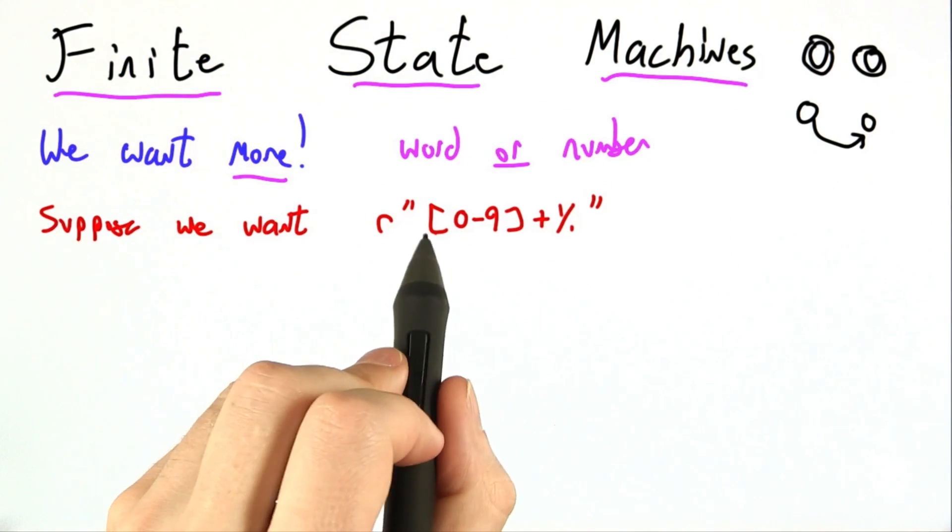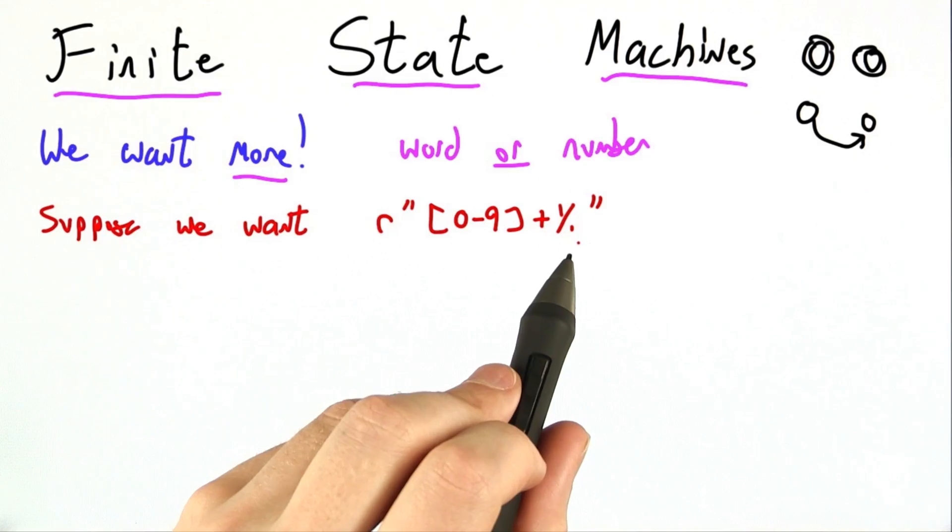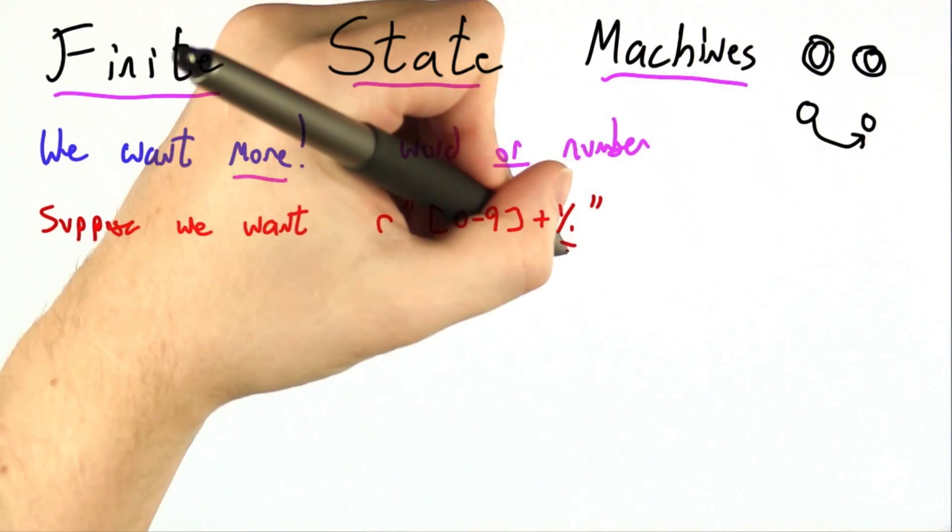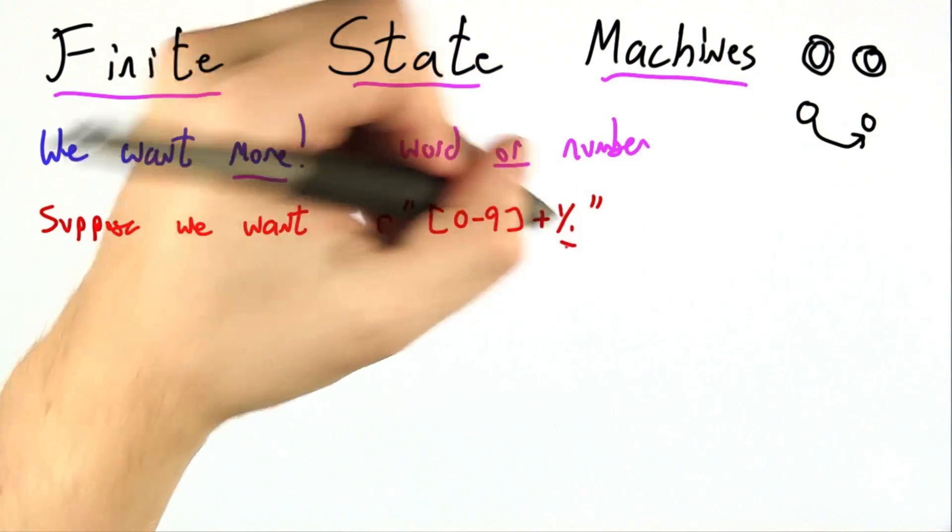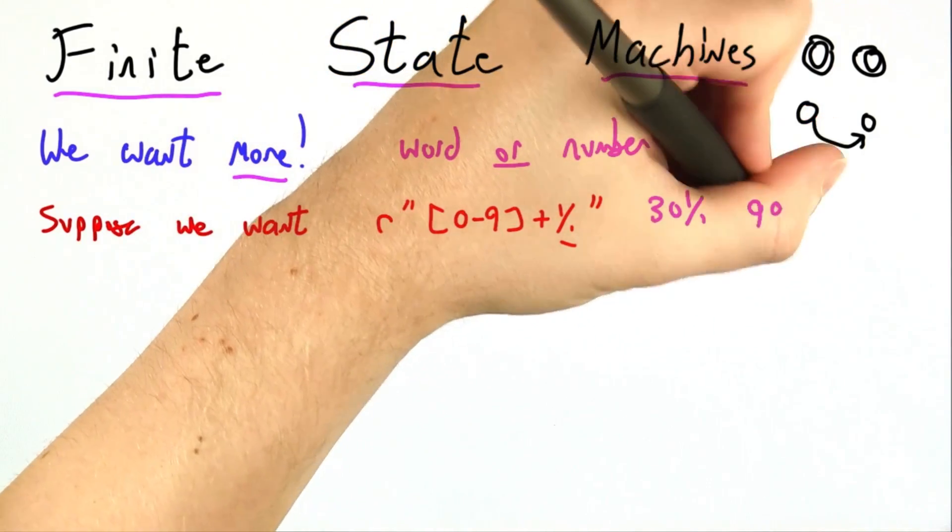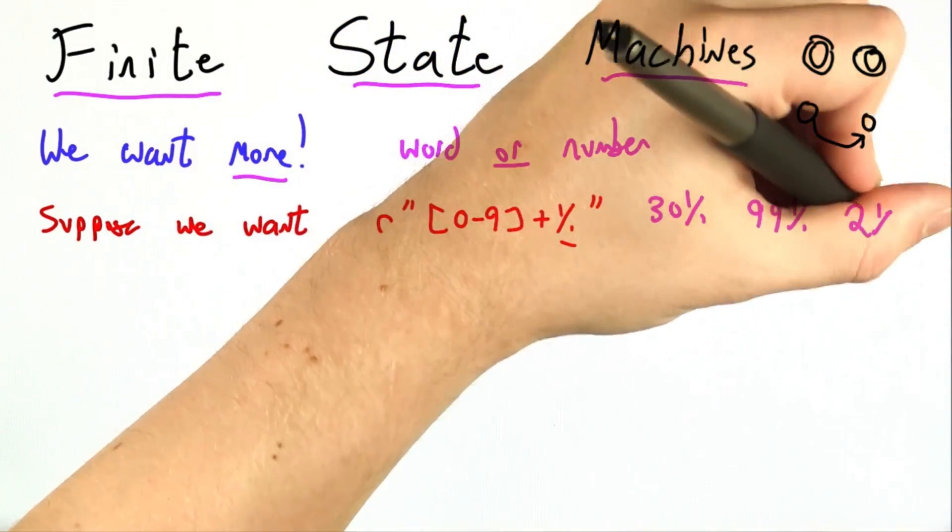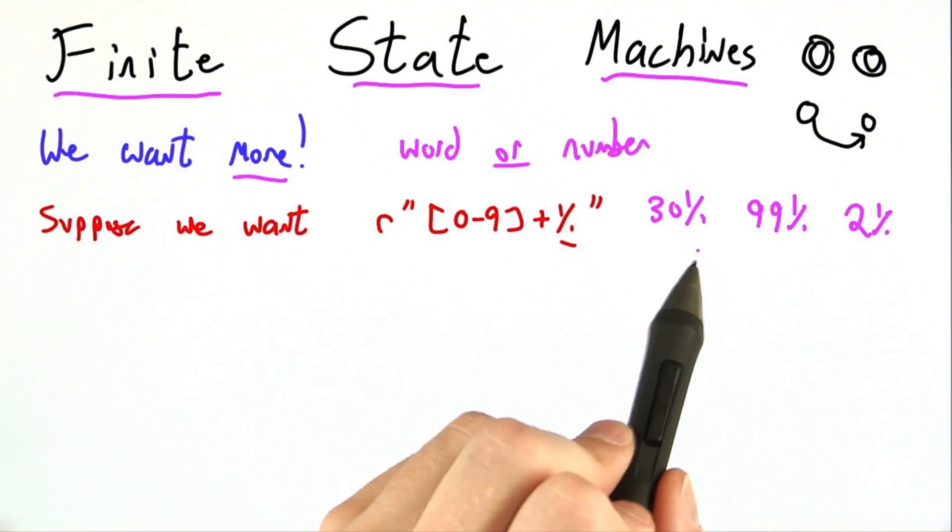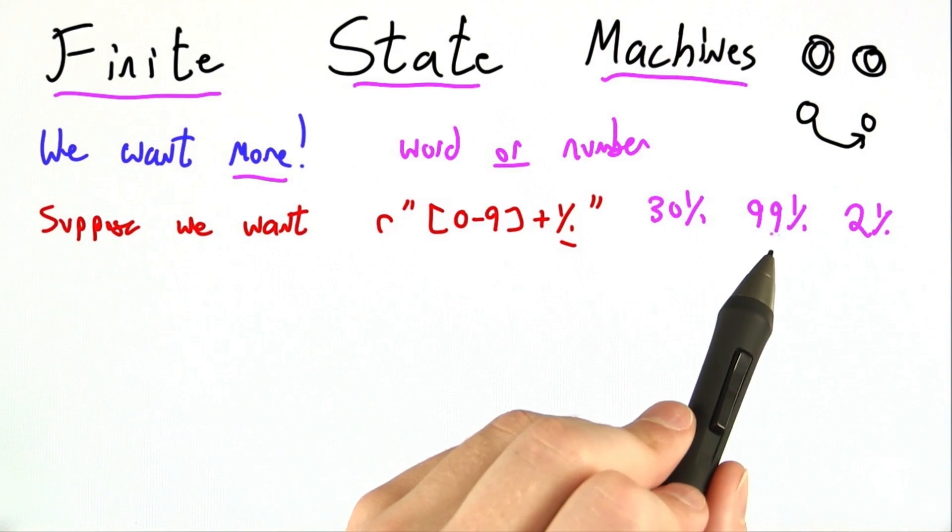Suppose we have the regular expression 0 through 9 plus percent sign. Any character like this that just appears on its own is matched directly. So this catches strings like 30%, 99%, 2%, and various other things we might find describing sales or the fat content of milk.